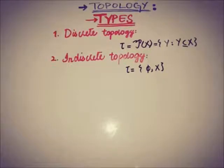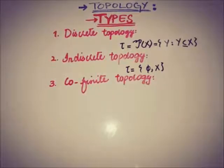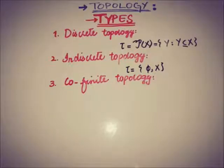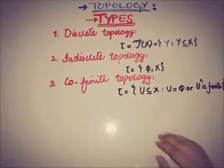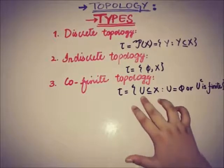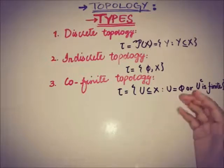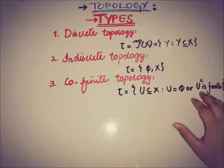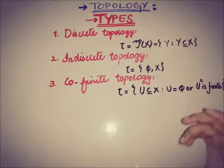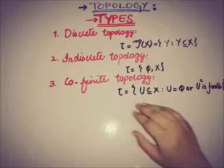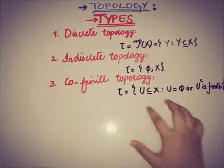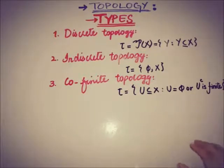The third type of topology is co-finite topology. If X is any non-empty set, then the collection of subsets of X is of the form where U is any subset of X such that U may be the empty set, or the complement of U in X is finite. This type of collection is known as co-finite topology, also called finite complement topology.